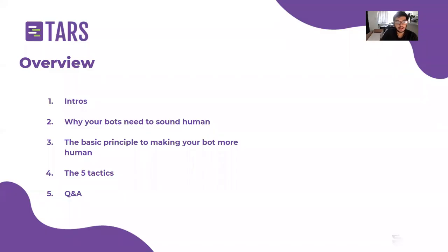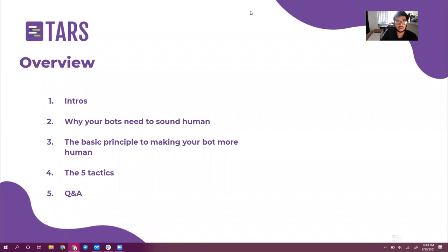In the third part, we are going to cover the basic overarching principle that we're going to use in this webinar to make our chatbots feel more human. There's one underlying principle that's going to inform each of the five tactics we discuss, and it's worthwhile to keep that principle in mind as we go through the live demo in part four. And then finally, in part four, we're going to go into the tactics you can use to improve your chatbots. Once we're done with that section, if you have any questions, we will answer them in the Q&A.